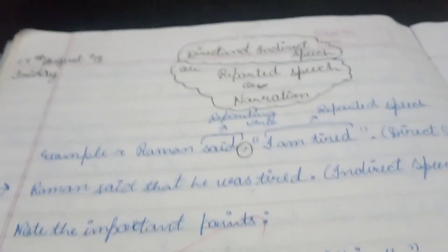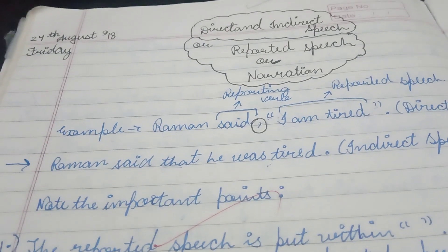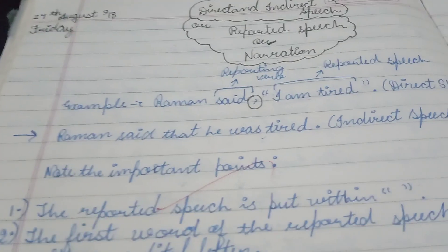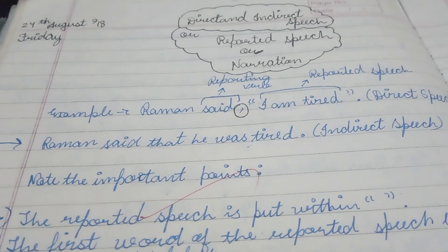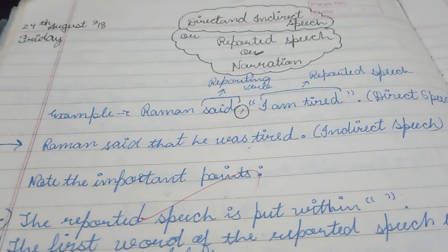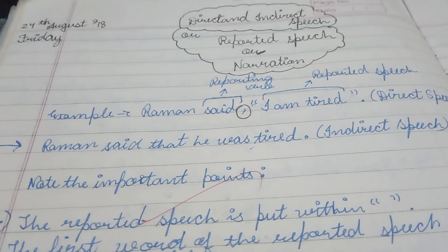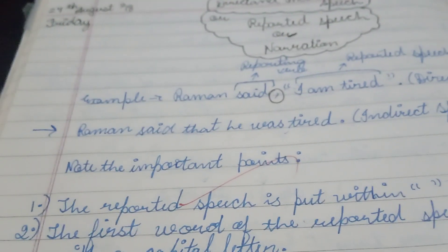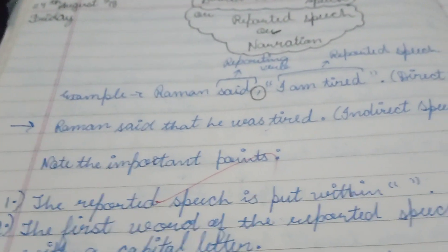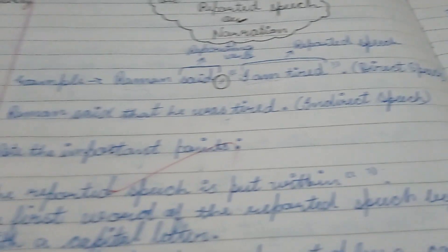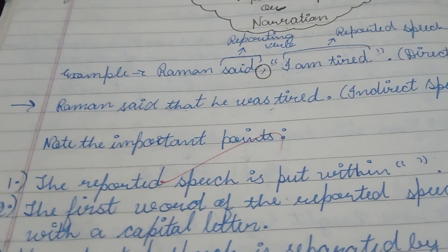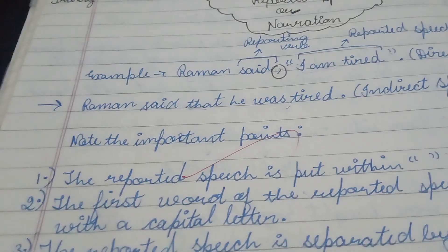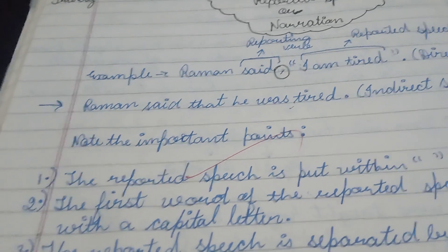Note these important points. First, the reported speech is put within double inverted commas, that is, quotation marks. Second, the first word of the reported speech begins with a capital letter — like 'I am tired,' where 'I' is capital.